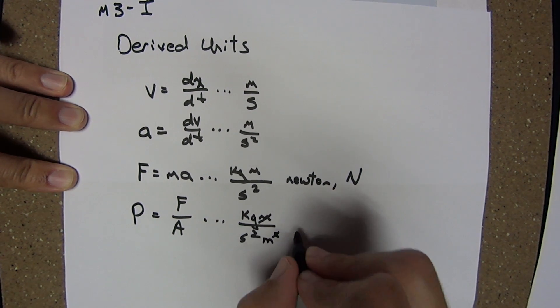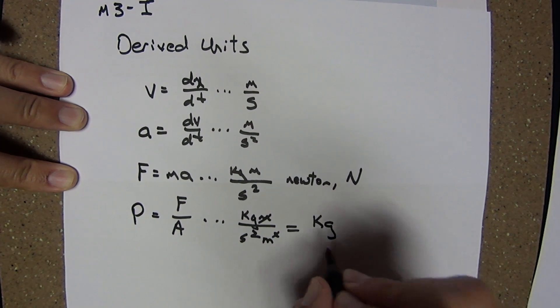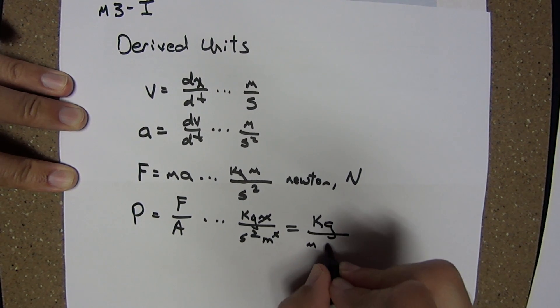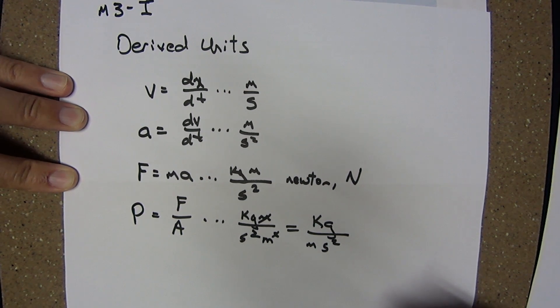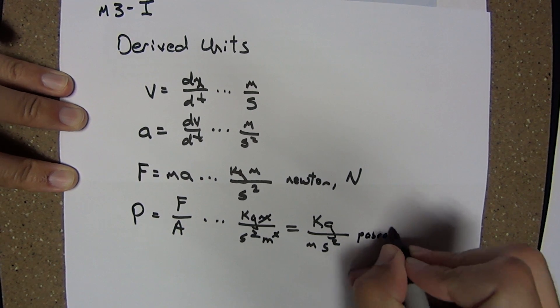Canceling units here, we see that pressure could be expressed in kilogram, meter, per second squared. This combination of units we call a Pascal.